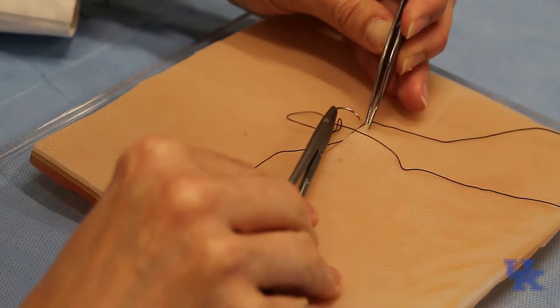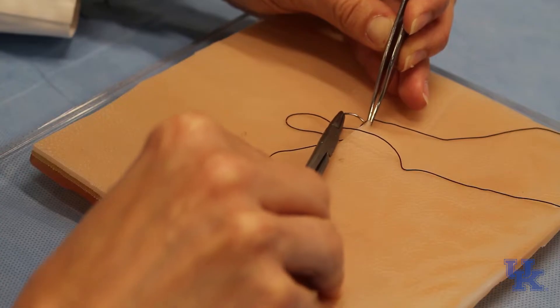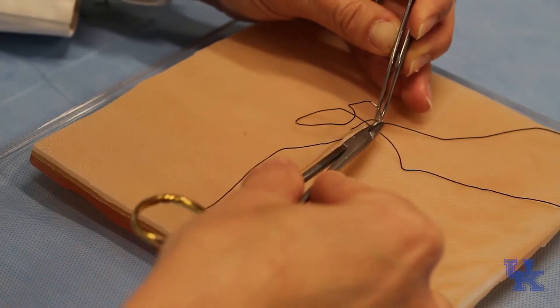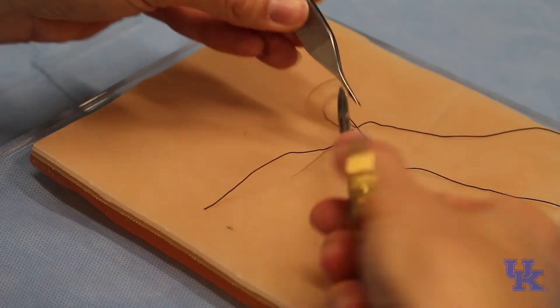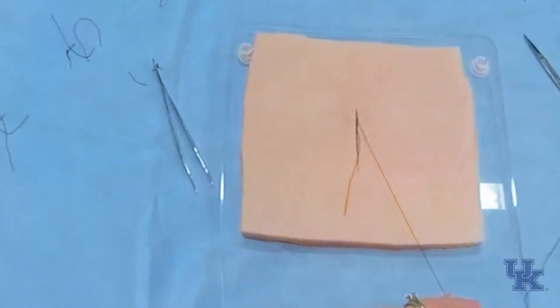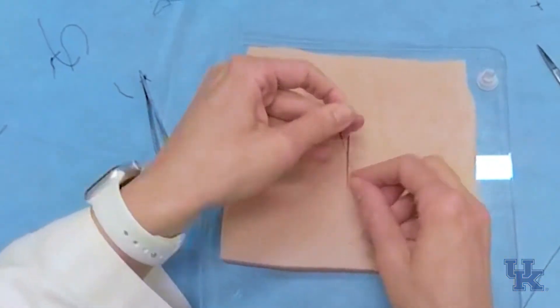Change the way I hold the instrument, go back in just below the epidermis, back to deep. So this is the same as what we just did, and you're going to tie a knot.